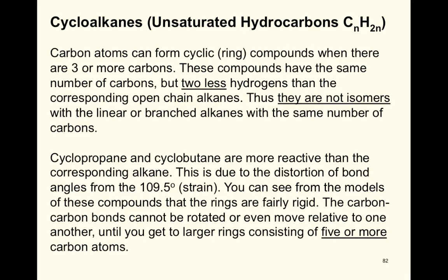Cyclopropane and cyclobutane are more reactive than corresponding alkanes due to distortion of bond angles, known as angle strain. The normal tetrahedral bond angle is 109.5°. Cyclopropane has a 60° bond angle, and cyclobutane has a 90° bond angle — both far from 109.5°, making these molecules quite reactive. The rings are fairly rigid, and carbon-carbon bonds cannot freely rotate until you get to rings of five or more carbons.